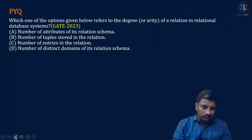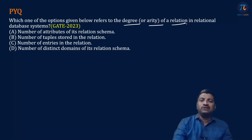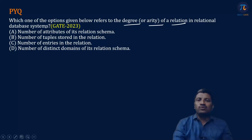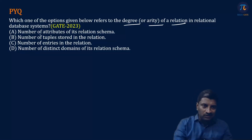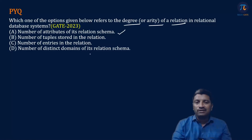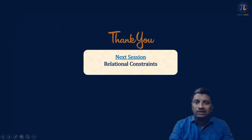Now let us see one previous exam question. Which one of the options refers to the degree or arity of a relation in relational database systems? The number of attributes of its relation schema is called the degree of a relation. So this covers the relational model terminology. In the next session, we will discuss relational constraints. Thank you.